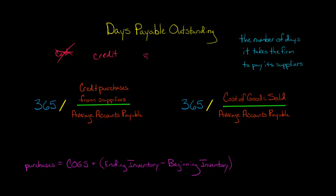If you see that one period it's 35 days, and then the next period it's 38, and then the next period is 45, that could indicate that Walmart is having trouble paying off its suppliers.